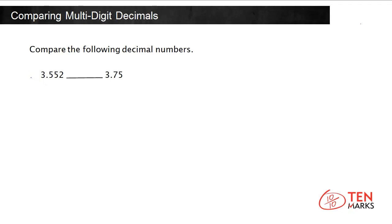Take a look. We have 3 and 552 thousandths and 3 and 75 hundredths. The number of digits after the decimal in the two numbers are different. You know adding a zero to the end of a decimal number, as long as it is after the decimal point, does not change the value of the number. So let's add a zero to the end of 3 and 75 hundredths so that the number of digits are the same. This will make it easier to compare the digits at each place. So now we have 3 and 552 thousandths compared to 3 and 750 thousandths.